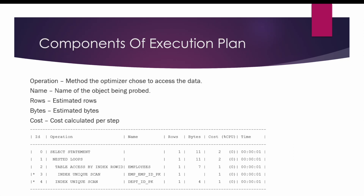Let us see what are the different components of the execution plan. If you look at the execution plan closely, these are the different components: id, operation, name, rows, bytes, cost, and time.